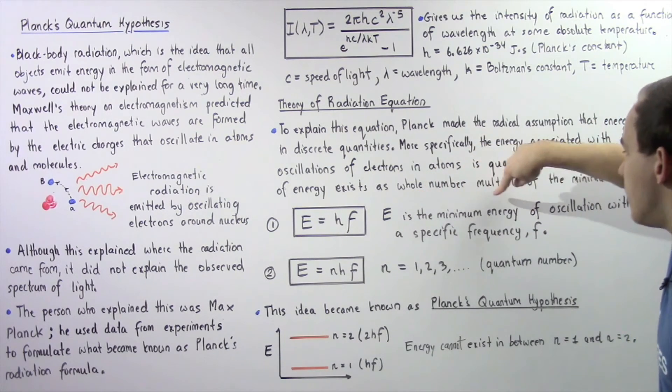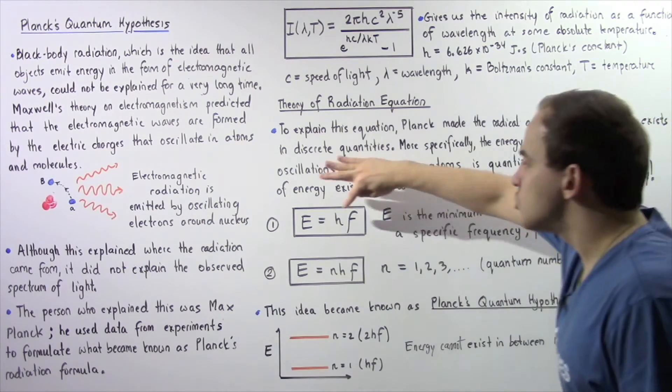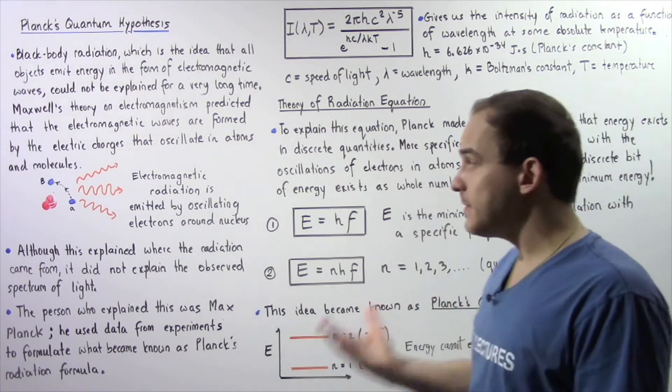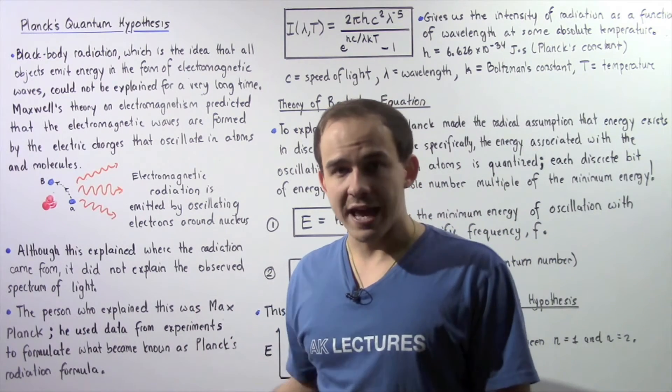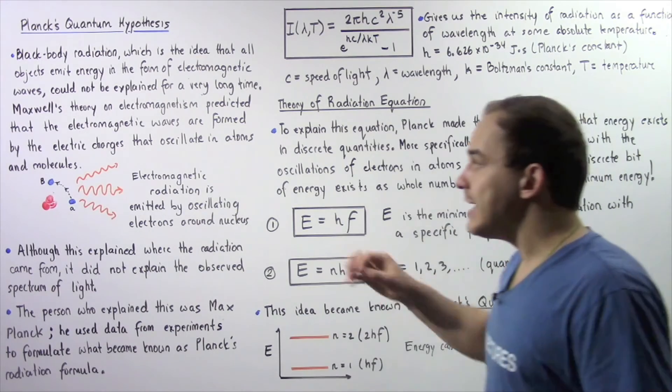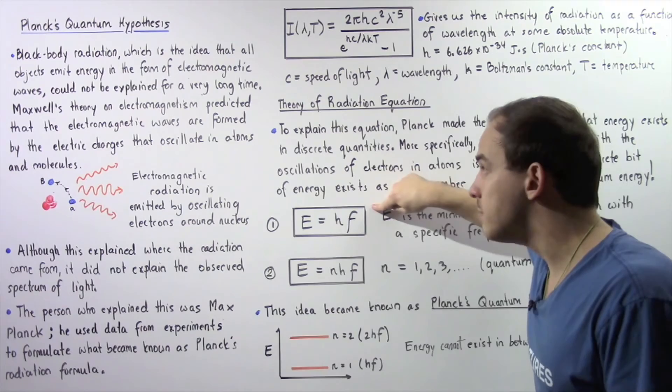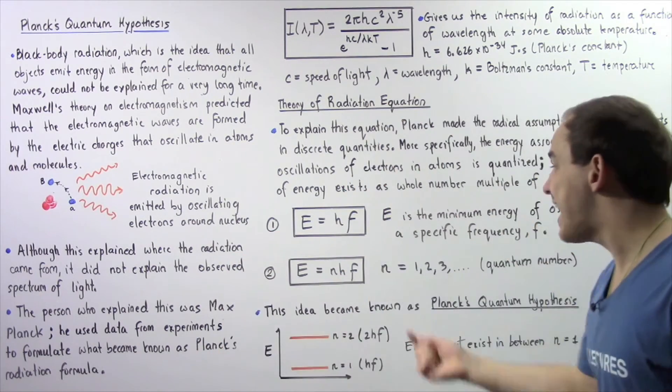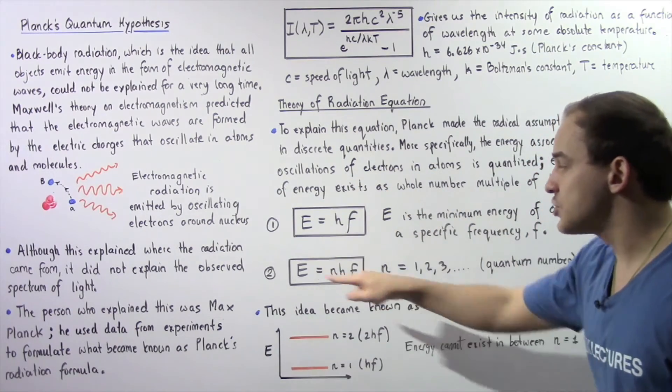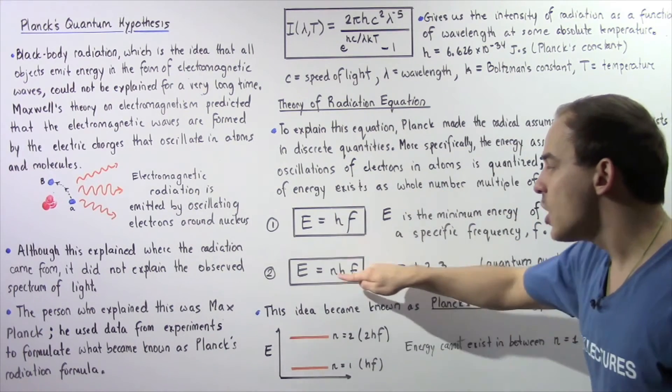So H is Planck's constant and F is the frequency of our oscillation. Now this equation basically tells us that if our oscillation energy is greater than the minimum, then it must exist as a whole number multiple of this quantity. So E is equal to N multiplied by H multiplied by F, where N is our multiple number.